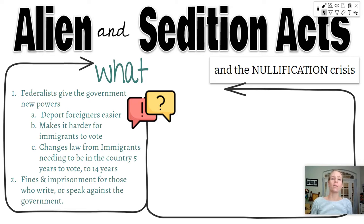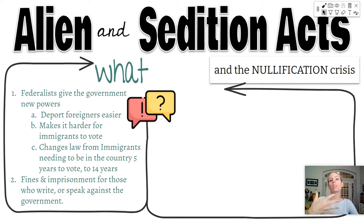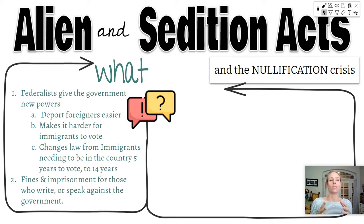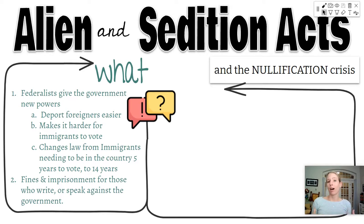When John Adams replaced George Washington as President, Adams was a staunch Federalist with a Federalist Congress. At this time there was a war between England and France — England was trying to drag America in because they were our number one trading partner, and France was trying to drag us in because they had helped us during the Revolutionary War. Federalists were trying to navigate this balance of peace as a brand new country. John Adams and the Federalist Congress passed the Alien and Sedition Acts, which gave the government new powers to deport immigrants more easily, made it harder for immigrants to vote, and changed the path to citizenship from 5 to 14 years — basically making it harder for people to vote.